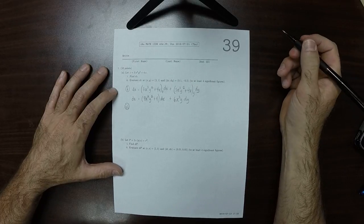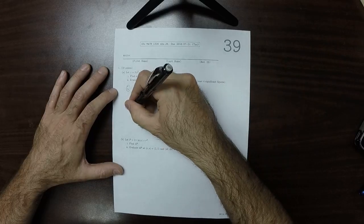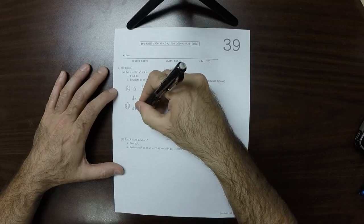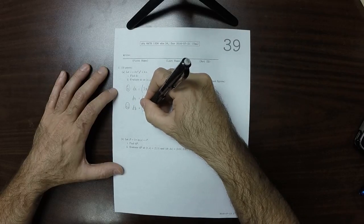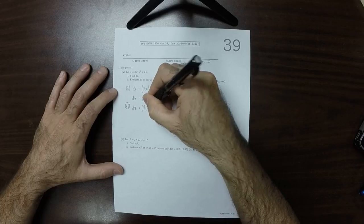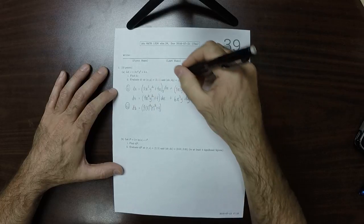Evaluate dz at that point. So then dz is 9 times 3 squared times 1 squared plus 4, and then dx is 0.1, plus 6 times 3 cubed, and y is 1, and dy is negative 0.2.